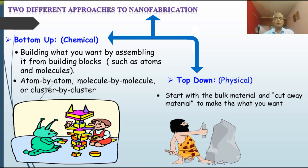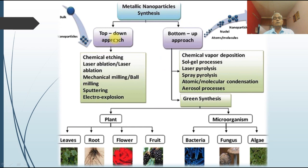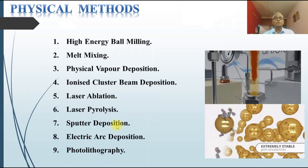A cluster is something of about 100 to 2000 molecules or atoms coming together to form a cluster. In a top-down approach we see chemical etching, laser ablation, mechanical milling or ball milling, sputtering, and electro-explosion. In a bottom-up approach, from atom to atom we proceed further. Sol-gel is a widely used technique when large yield is needed, along with spray pyrolysis, atomic molecule condensation, aerosol process, and green synthesis using microorganisms and plant parts.